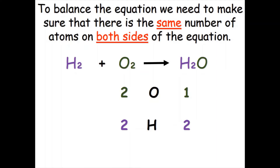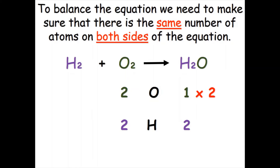Now we go through the elements step by step. Starting with oxygen, we can see it is not balanced: we have two oxygen atoms on the left and only one on the right. The easiest way to balance this is to double the oxygen atoms on the right — we just multiply that one by two. That means we need to put a 2 in front of the water. So now we have two oxygen atoms on both sides and two water molecules.